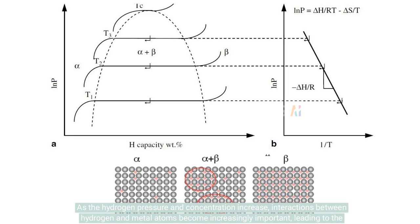As the hydrogen pressure and concentration increase, interactions between hydrogen and metal atoms become increasingly important, leading to the nucleation and growth of a new metal hydride beta phase.